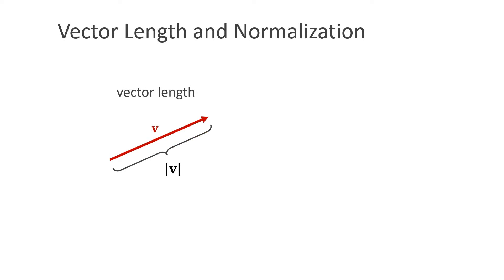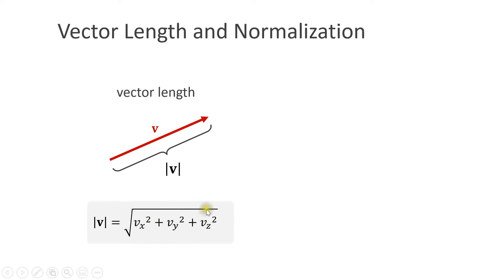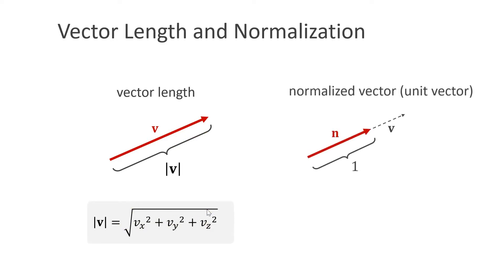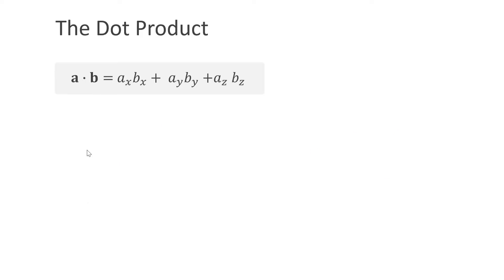Computing the length of a vector is pretty simple — we add the squares of all the components and take the square root. An important concept in simulation is a normalized vector, or unit vector. This is a vector that points in the same direction as v but has length 1. We can compute it by scaling v by the inverse of its length. Finally, we have two very important operations: the dot product and the cross product.